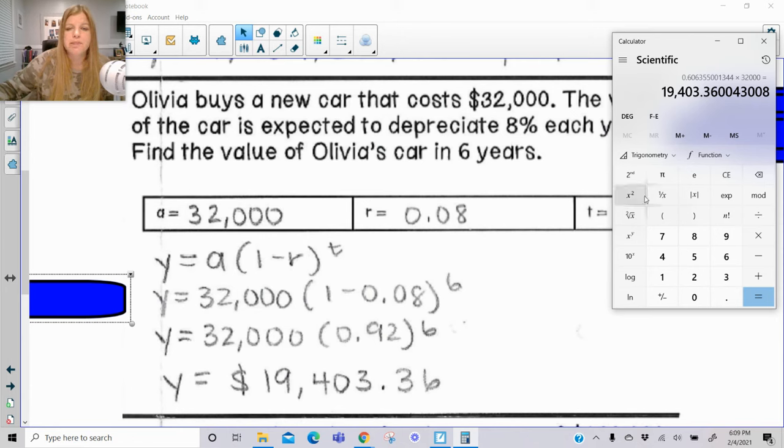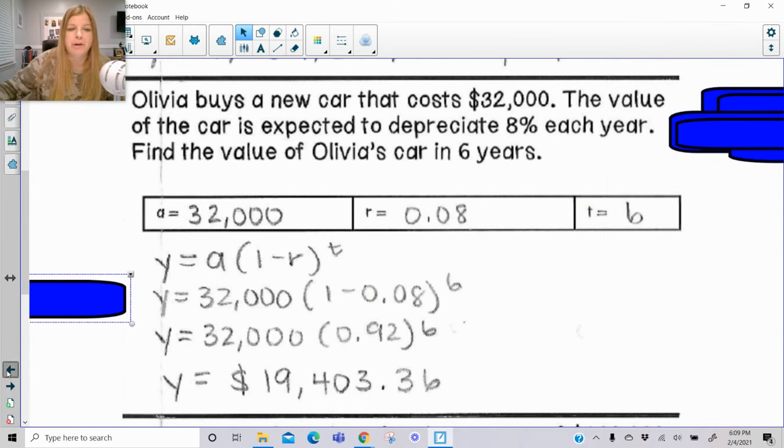If I was to multiply first and then use my exponent, I'm just going to show you an example. $32,000 times 0.92, and then raise that to the sixth power, I'm going to get an insanely large number. So order definitely makes a very big difference.